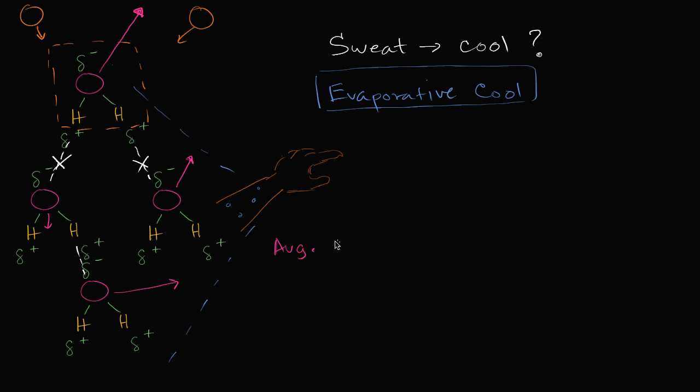So average kinetic energy is going to go down. Or another way of saying it is that your temperature is going to go down. Your temperature is going to go down because as these molecules turn into water vapor, they're going to be the highest kinetic energy of them. So energy is transferred to them and then they escape. And so what's left over is going to have a lower average kinetic energy.